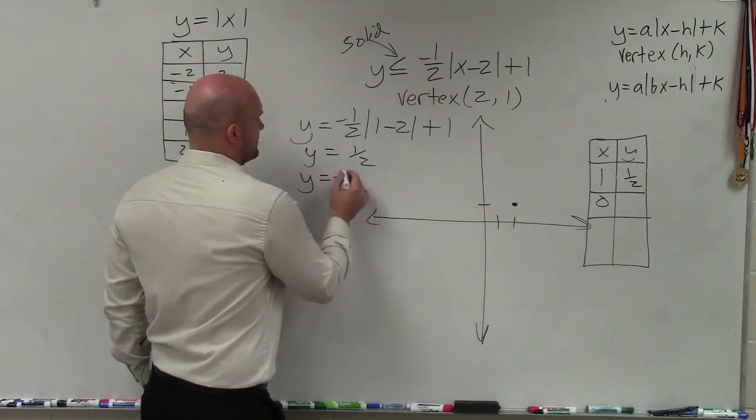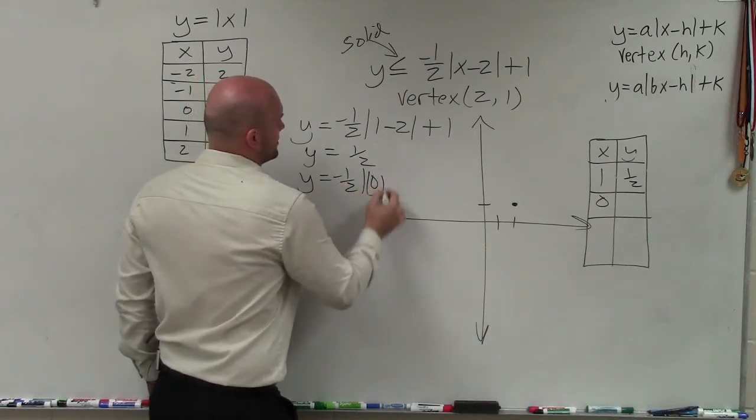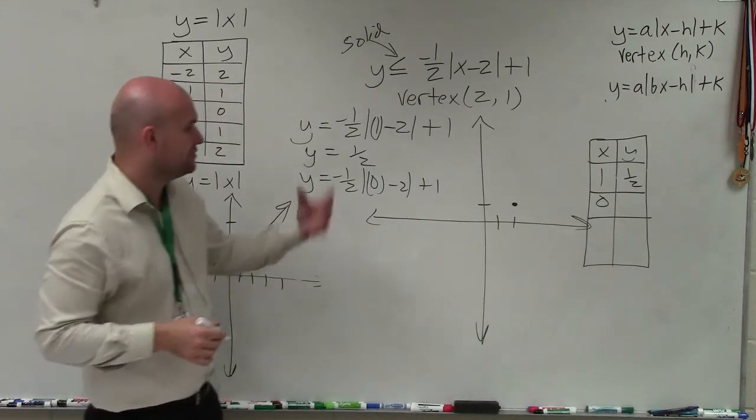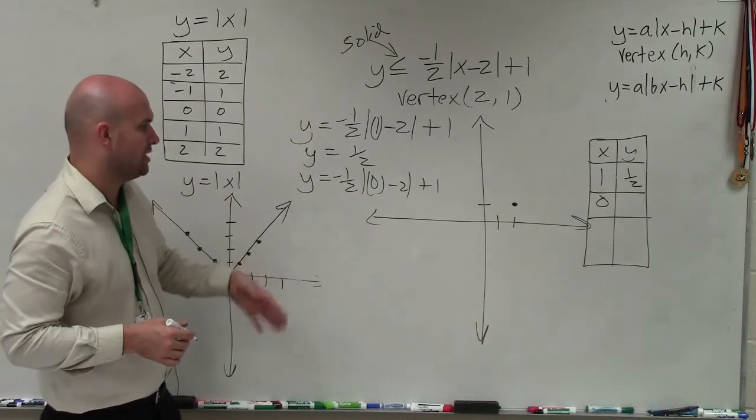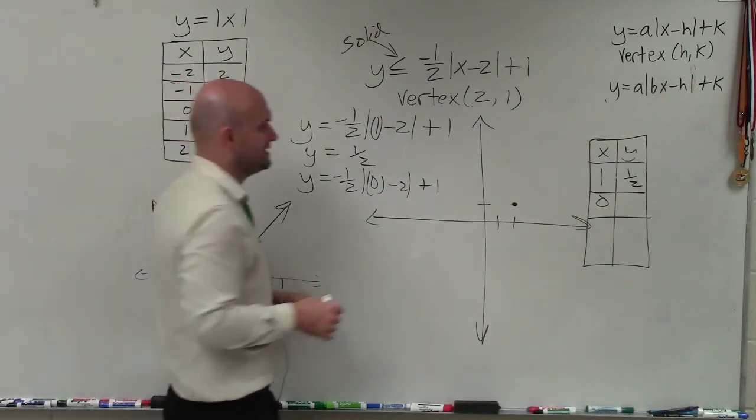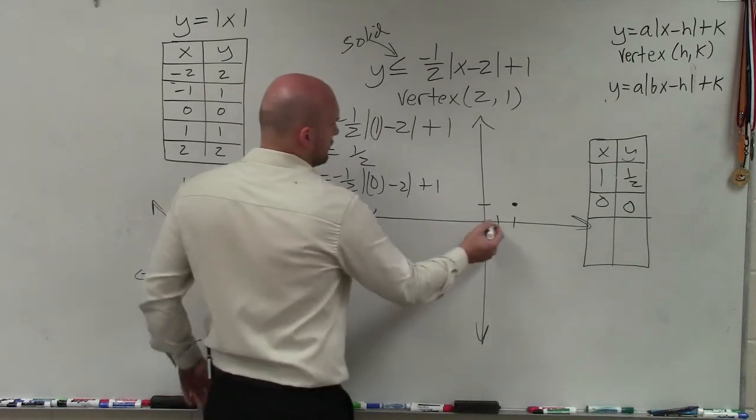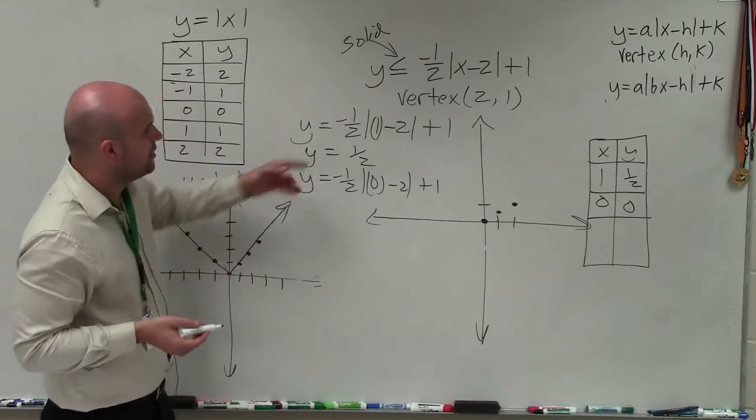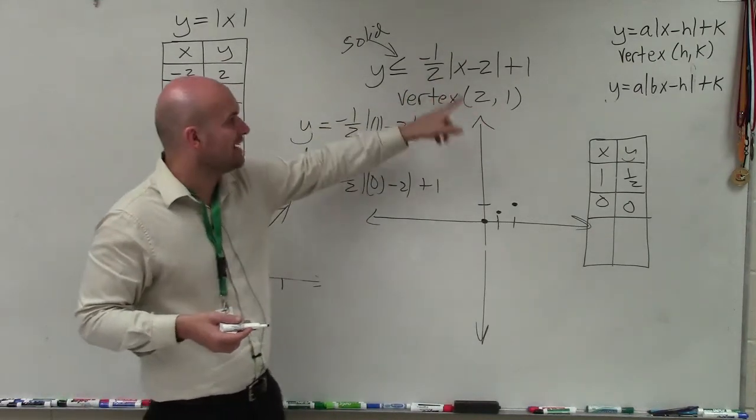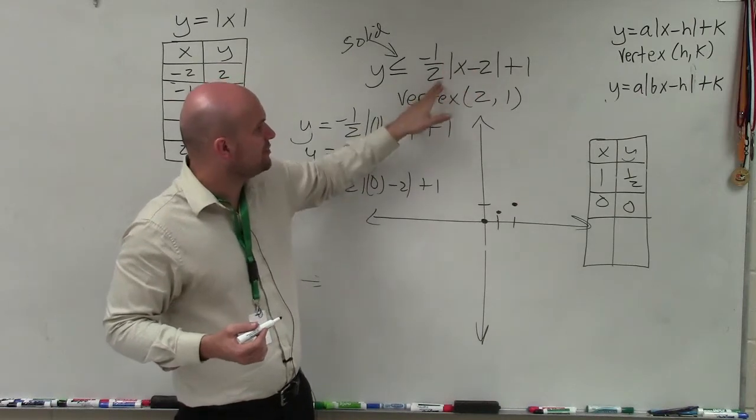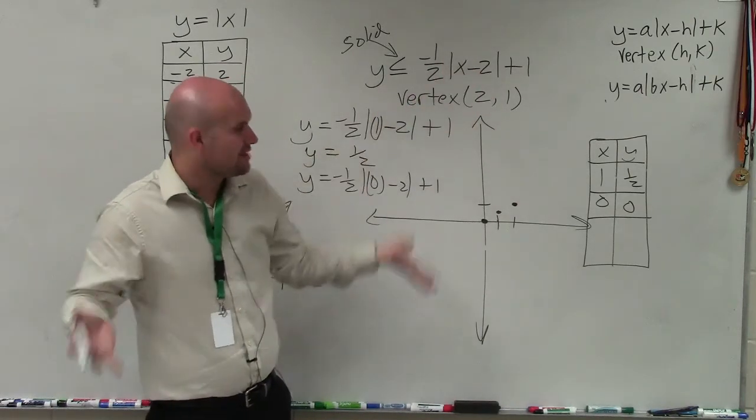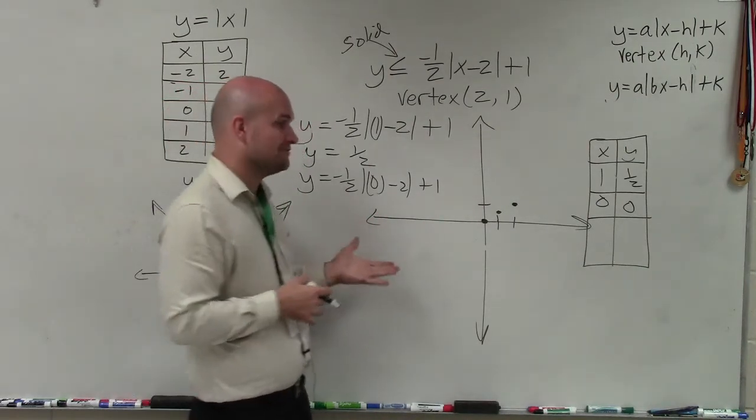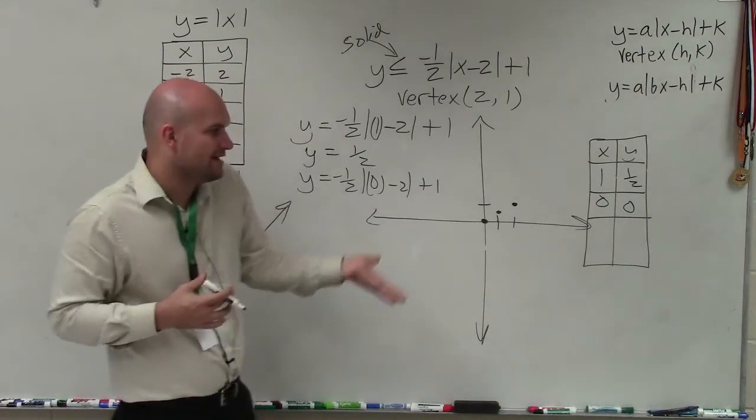Now let's do 0. y equals negative 1/2 times the absolute value of 0 minus 2 plus 1. 0 minus 2 is negative 2. Absolute value of negative 2 is 2. 2 times negative 1/2 is negative 1. Negative 1 plus 1 is 0. The other point I would have chosen would have been 4, because 4 minus 2 is 2, and then 2 would have been divisible when I multiplied it by that 2. But we have our two points. These are fine.